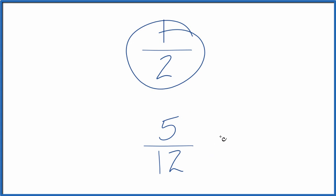We need to find a common denominator, something that both 2 and 12 go into evenly. Once we have a common denominator, we can compare the numerators and figure out whether 1 half is greater than 5 twelfths or 5 twelfths is greater than 1 half.